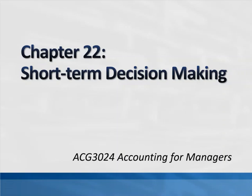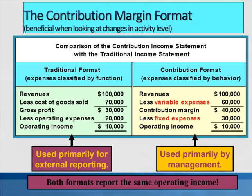Let's go ahead and take a look at chapter 22, which is all about short-term decision making. It's one of my more favorite chapters to cover because we actually start to look at how we can make decisions using all this accounting knowledge that we've gained throughout the course. One of the things we do when making short-term decisions is to break up our income statement into what's called a contribution margin format income statement.